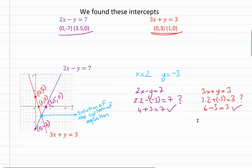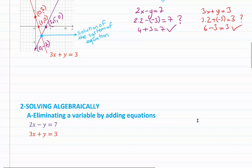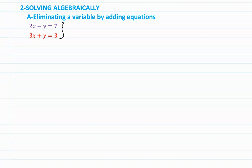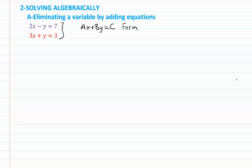There are two ways to solve algebraically. The first is eliminating a variable by adding equations. I'm going to work on the same equations. They must be in the ax plus by equals c form. Since my equations are already in that form, I don't need to make any changes.